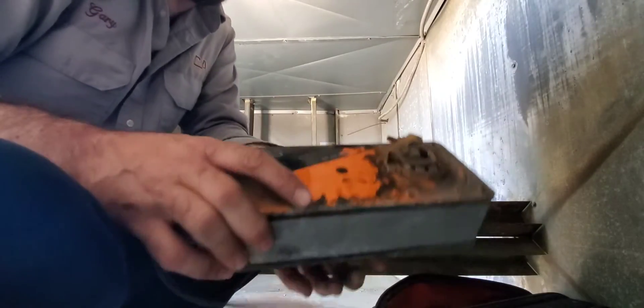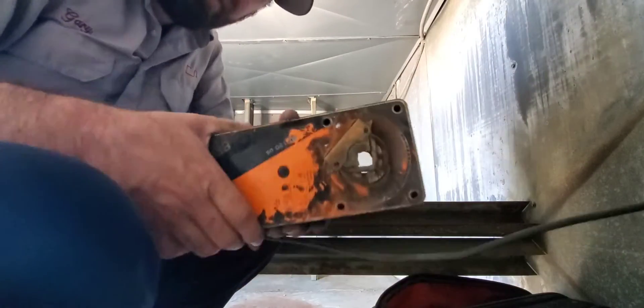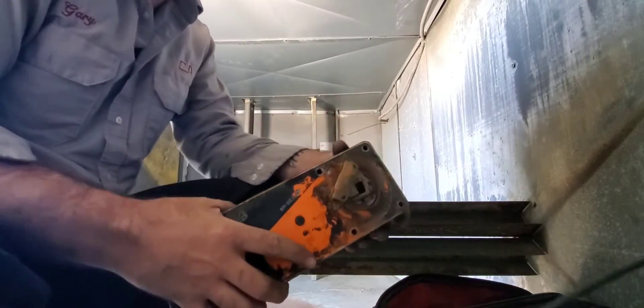All right, so we're inside of Makeup Air. It's direct fired. The fresh air dampers are behind the camera. You can't see them. I'm changing out this Belimo actuator because it has failed.